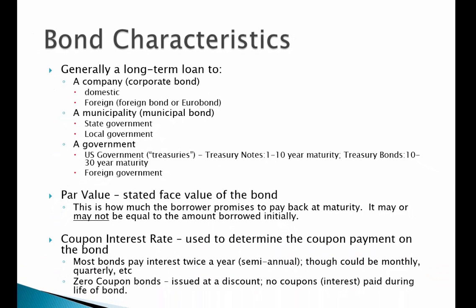In the simplest possible terms, a bond is simply a long-term loan, and it can be a loan to a variety of different institutions. We can have loans to companies — a corporate bond — which can either be a domestic company based here in the U.S., or a foreign company, where we might have a foreign bond or a eurobond, which is a bond denominated in a currency other than the home currency of the borrower.